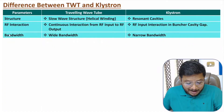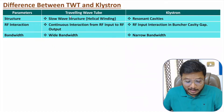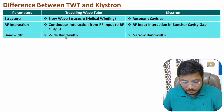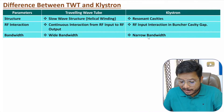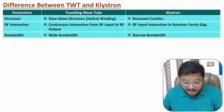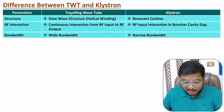In terms of bandwidth, the traveling wave tube offers wide bandwidth while the klystron has narrow bandwidth. Wide bandwidth is the basic advantage of the traveling wave tube.